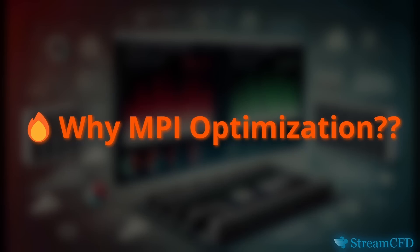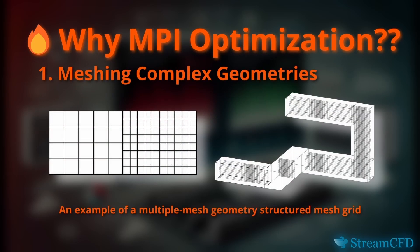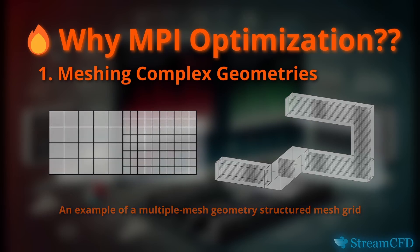So before we dive into the tool, let's first understand why mesh load distribution is crucial in FDS simulations and why optimization is essential. FDS uses a structured mesh grid, and each mesh must be distributed across MPI processes. To make any change to the underlying cell allocation, we usually need to change the underlying mesh itself.